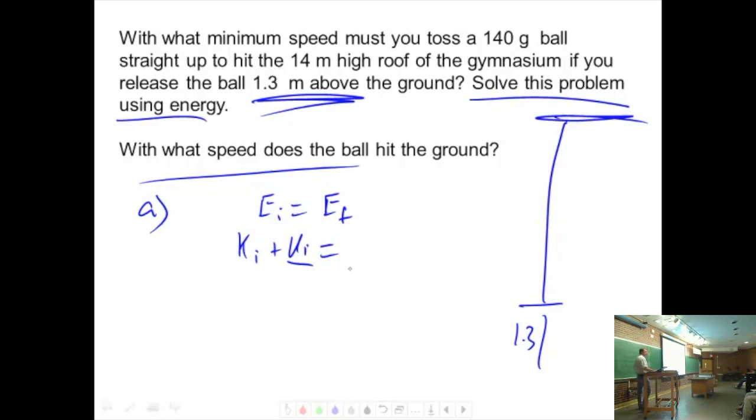What's its final energy state in the perfect world, in physics land? Does it have kinetic energy at the roof? No, we're assuming it just touches the roof, right? So it has zero velocity at the roof for that moment in time.